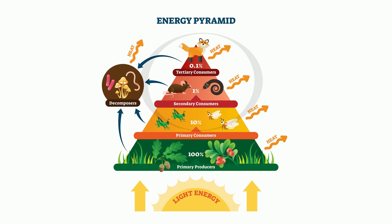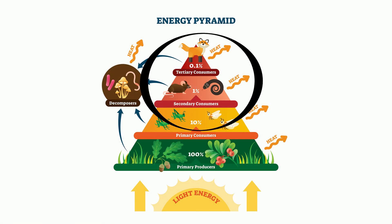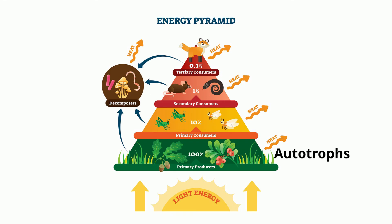If you look at an energy pyramid, you will find heterotrophs right above the consumers all the way to the very top of the energy pyramid. The base of the pyramid is always occupied by autotrophs that get their energy from the sun. Herbivores, which are also called primary consumers, make up the next level because they eat plants.